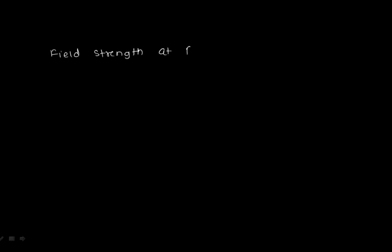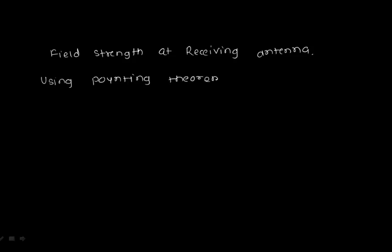Next, we recall Poynting's theorem to find the field strength at the receiving antenna. We have discussed received power and free space path loss; now we need to understand what the field strength should be at the receiving antenna. According to Poynting's theorem, if we are interested in power density at the receiving side, we need to know the electric field intensity and the magnetic field intensity — this gives us the power density of a practical antenna.